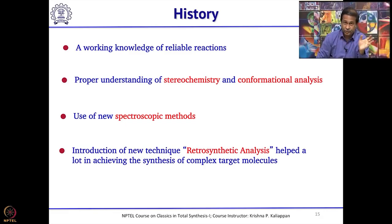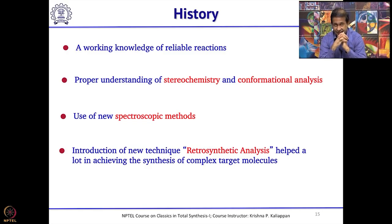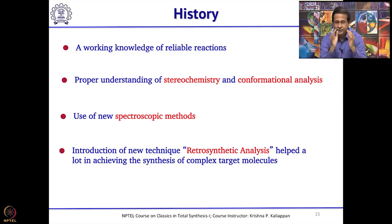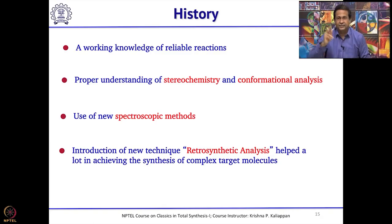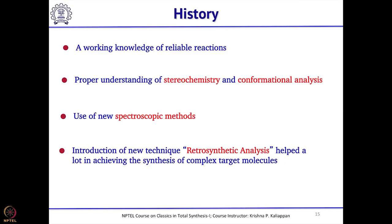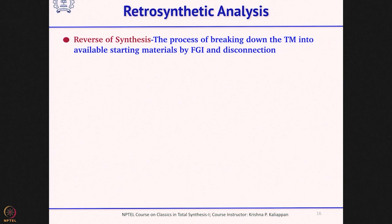Spectroscopy methods played a very important role for synthetic chemists to grow. In the 1970s, a very famous technique called retrosynthetic analysis, reported by Nobel laureate Elias Corey, helped all synthetic chemists solve complex problems by dissecting bonds into smaller and smaller molecules. Using retrosynthetic analysis, you can cut a complex molecule step by step, going from one molecule to the next, until you reach commercially available starting materials.